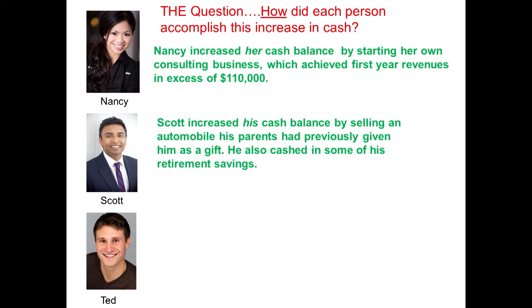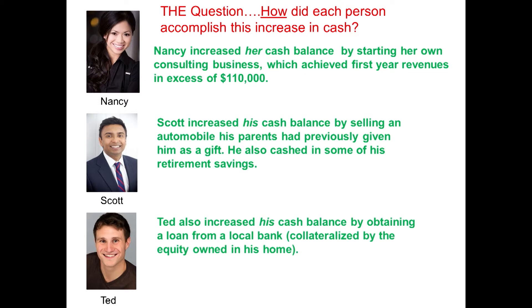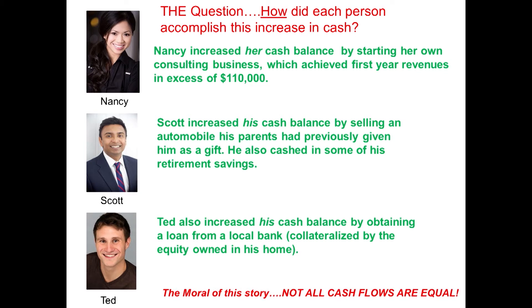What about Ted? Ted increased his cash balance by obtaining a loan from a local bank, and he collateralized it with equity that he had in his house. Not all cash flows are equal. Who do you think was more successful? Nancy was.